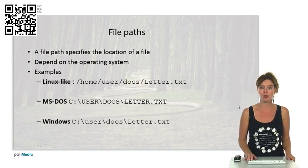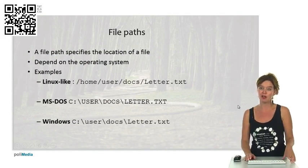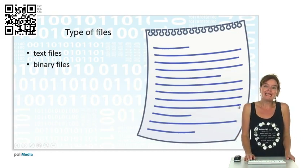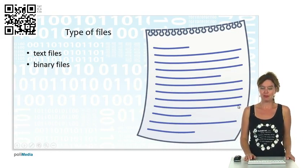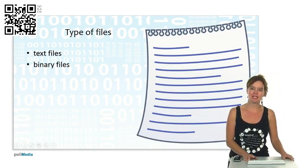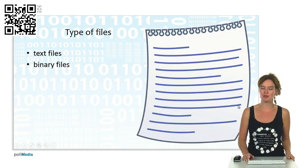There's basically two types of files: text files and binary files. Let's start looking at text files and we'll leave binary files for the next part.